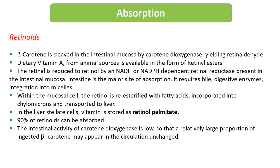Regarding absorption: beta-carotene from plant sources yields retinaldehyde with the help of carotene dioxygenase present in the intestinal mucosa. Dietary vitamin A from animal sources is available as retinyl ester. Both become the aldehyde form. In the intestinal mucosa, the aldehyde is reduced to retinol via reductase using NADH or NADPH as cofactor. The intestine is the major site for absorption, requiring bile and digestive enzymes so that retinol can be integrated into micelles.